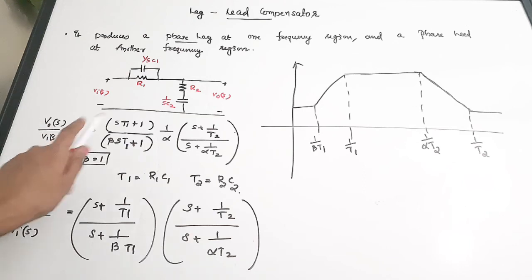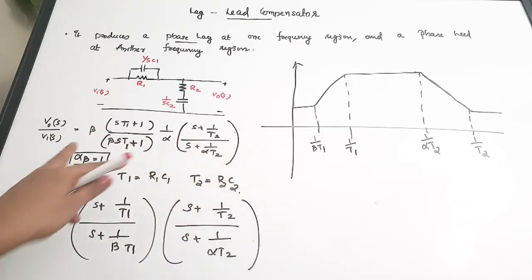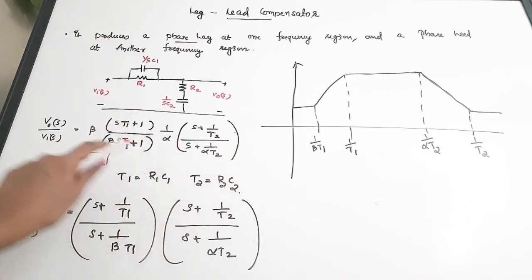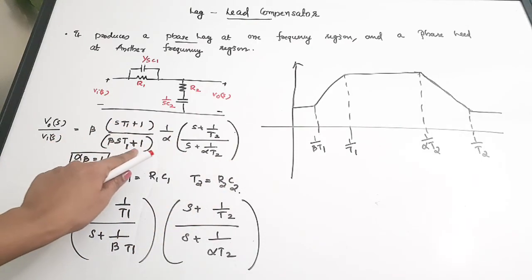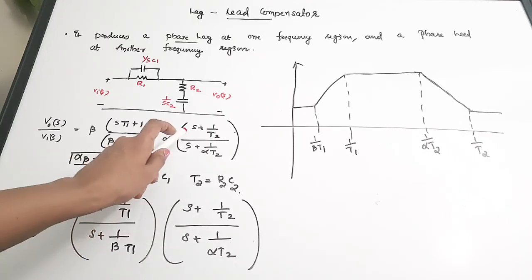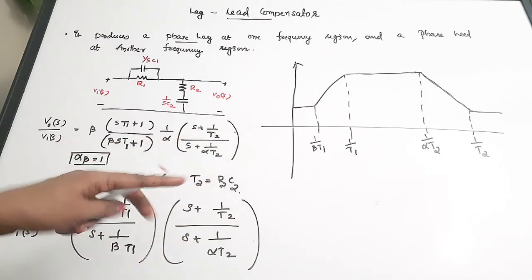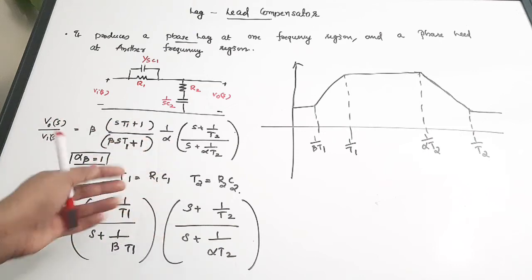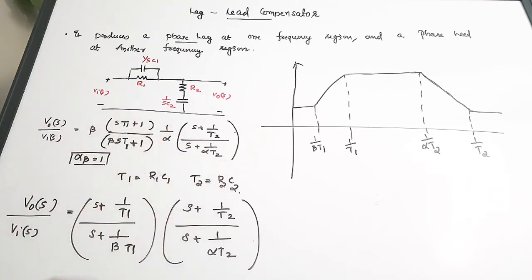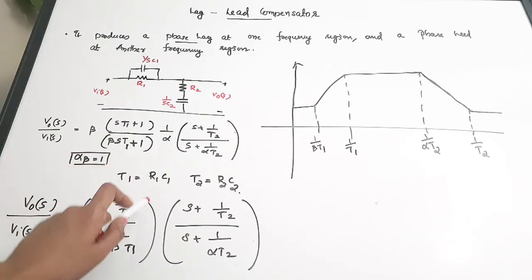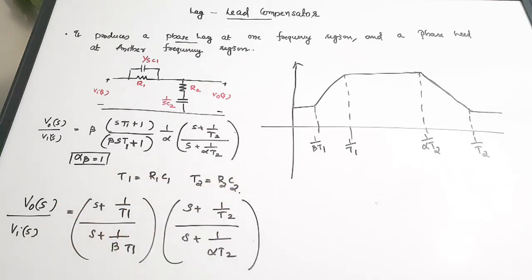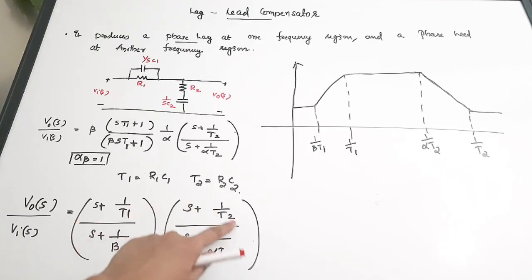The lag-lead compensator can be thought of as a cascading of a lead compensator and a lag compensator. The circuit has both parallel and series combinations. The transfer function is Vout(s)/Vi(s) = [β(sT1 + 1)/(βsT1 + 1)] × [(1/α)(s + 1/T2)/(s + 1/αT2)], where the first part is the leading transfer function and the second is the lagging part. Note that α·β = 1, T1 = R1·C1, and T2 = R2·C2.